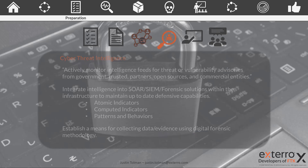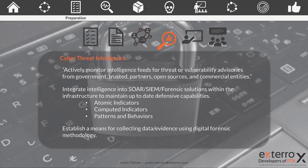Next, we need to stay up to date with our cyber threat intelligence. From the playbook, it says: actively monitor intelligence feeds for threat or vulnerability advisories from government, trusted partners, open sources, and commercial entities. This plays a big part with training. You need to stay up to date on what is what in the industry — what are the new breaches, the new technologies, and the new methodologies being used to cause problems.